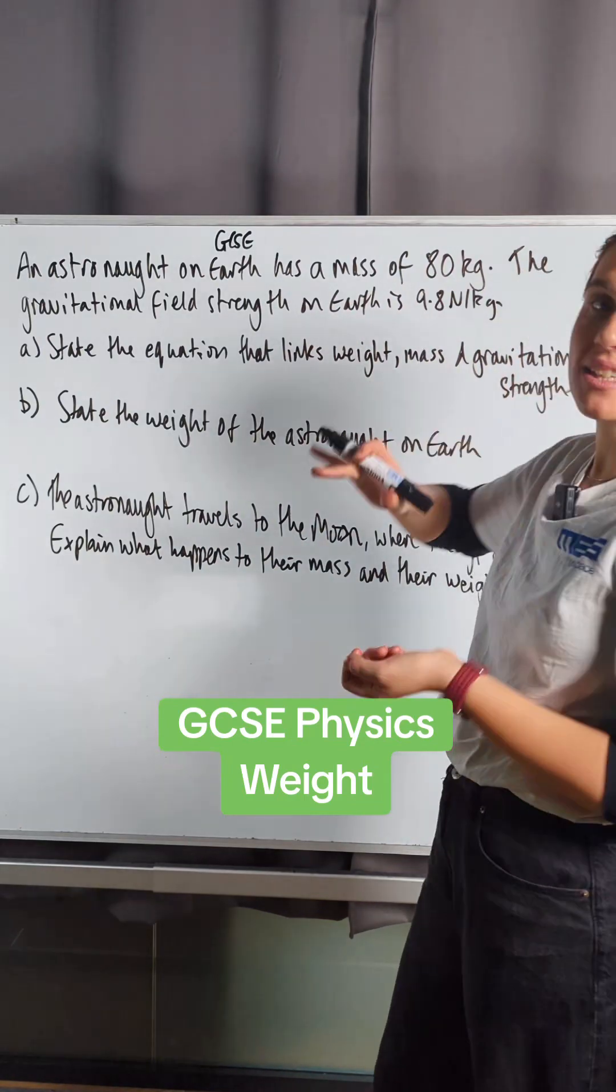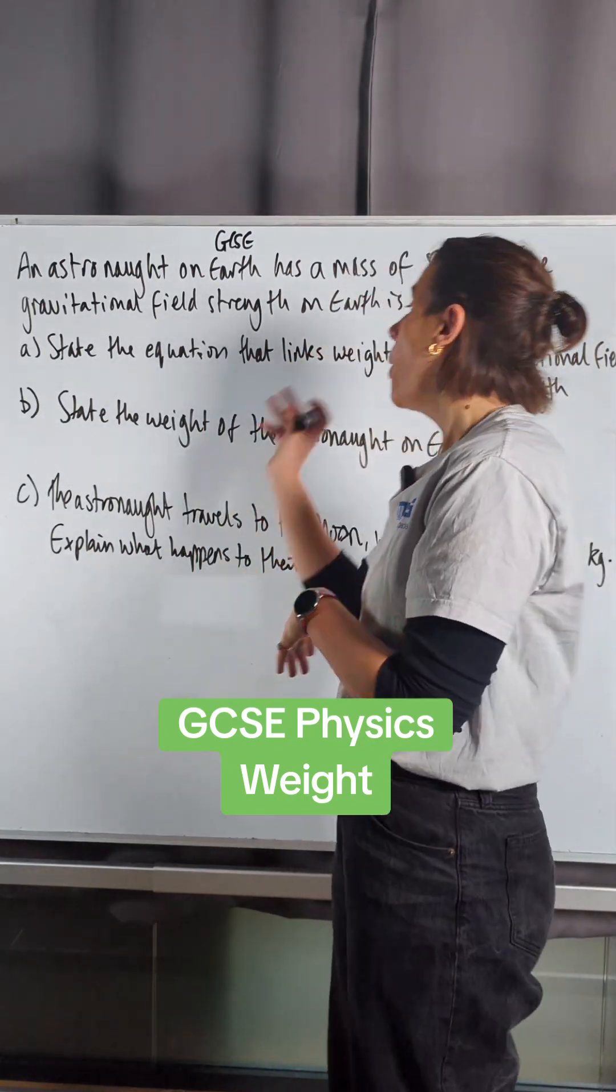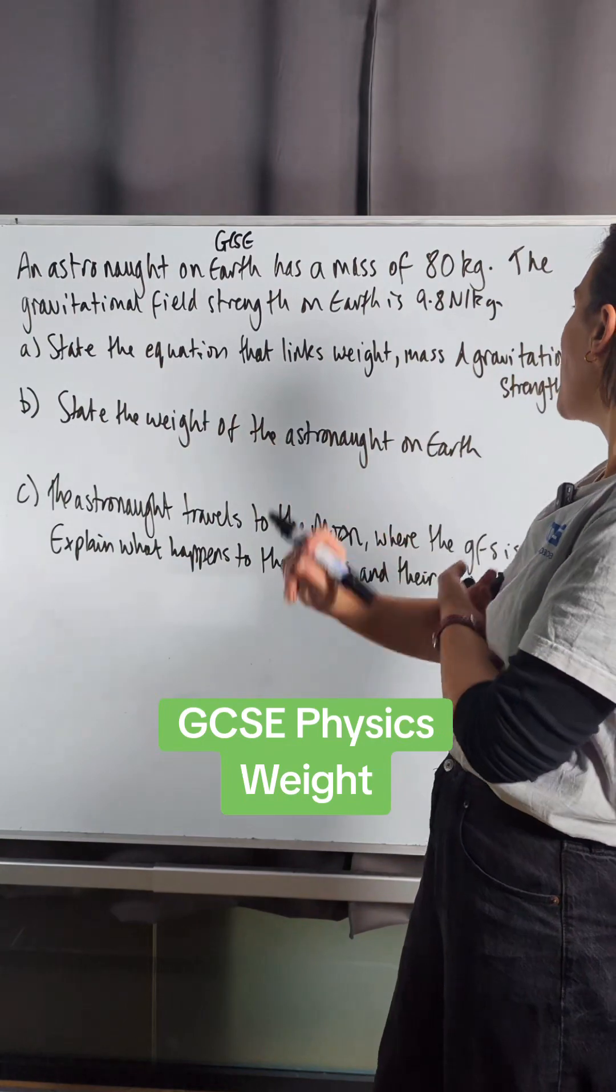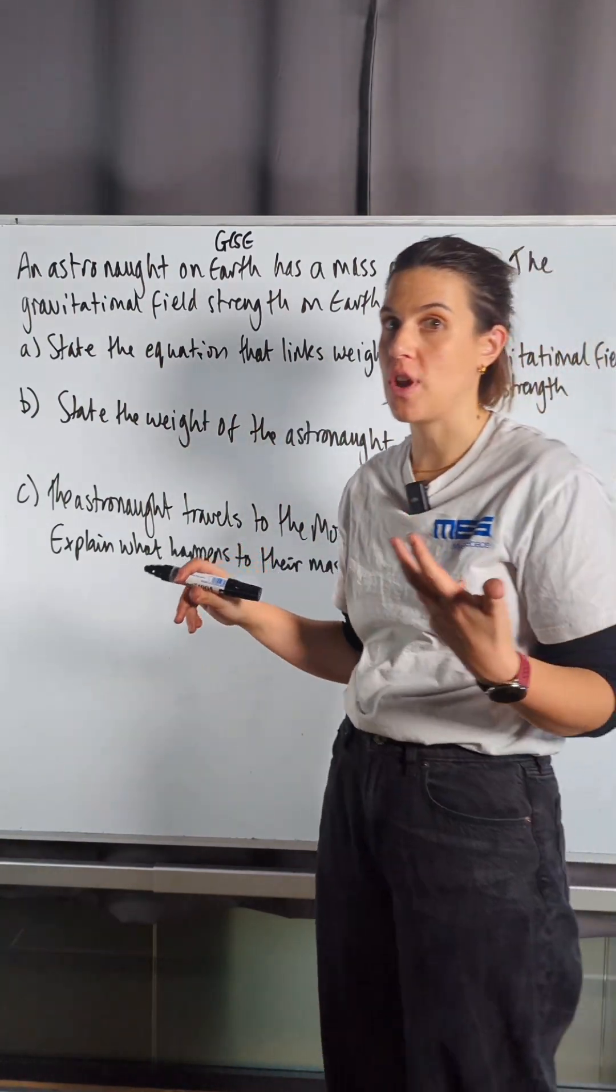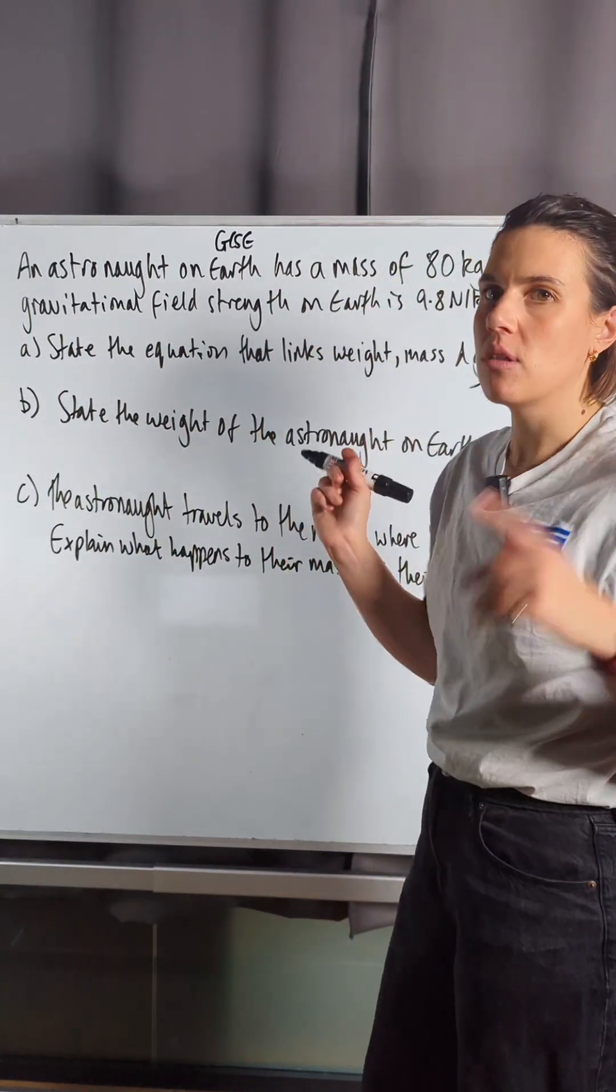We've got an astronaut on Earth who's got a mass of 80 kilos. We need to state the equation that links weight, mass and gravitational field strength. So, equation sheet's out, let's go.